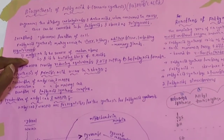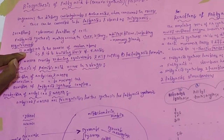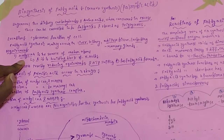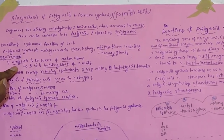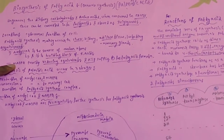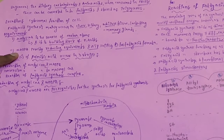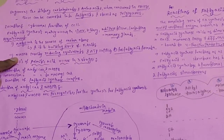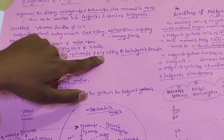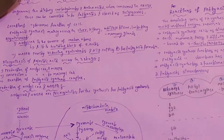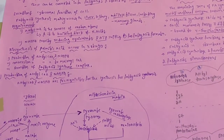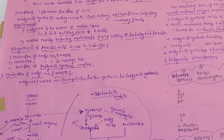The three required compounds are: first, acetyl-CoA, which is the source of carbon atoms and the building block of fatty acids — for example, palmitic acid consists of 16 carbons, all supplied by acetyl-CoA. Second, NADPH, which provides reducing equivalents, meaning it supplies hydrogens. Third, ATP, which supplies energy for fatty acid synthesis.